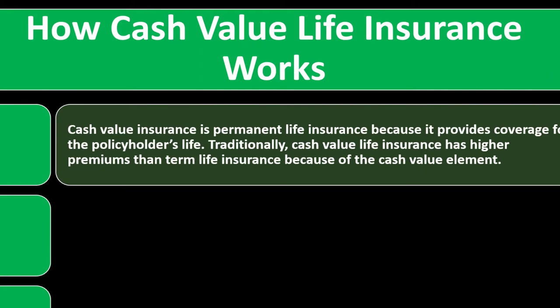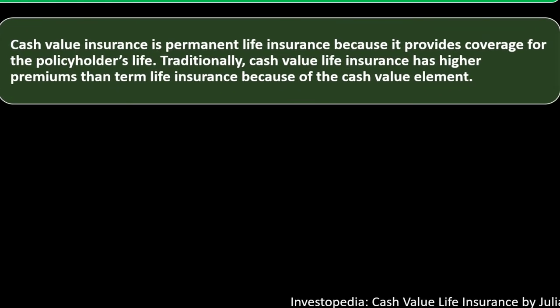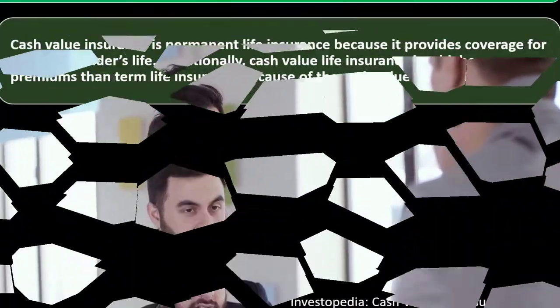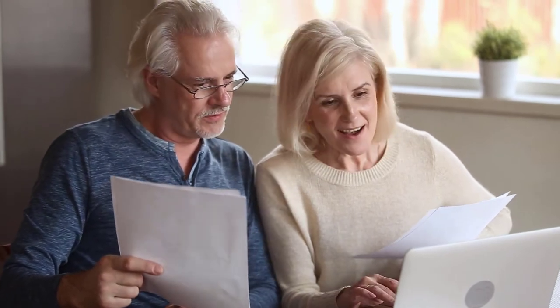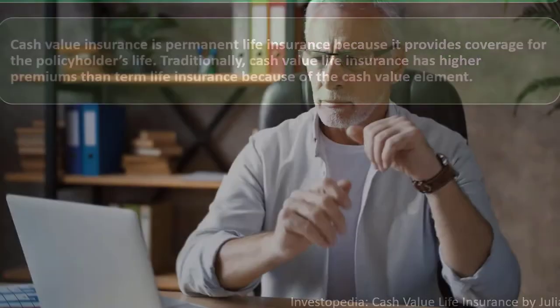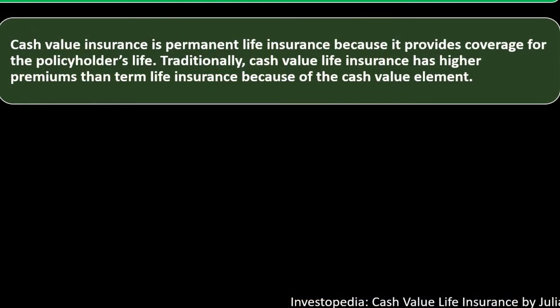Cash value insurance is permanent life insurance because it provides coverage for the policyholder's entire life. Unlike term insurance, where coverage is set for 10, 20, or 30 years — which is usually appropriate because you can estimate when you'll need life insurance, typically when you have debt and dependents — cash value life insurance has higher premiums than term life insurance because of the cash value component.